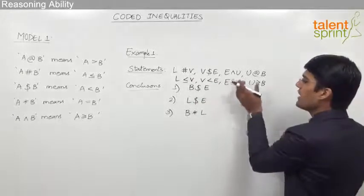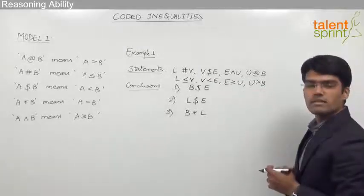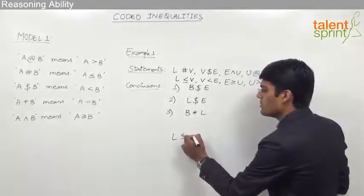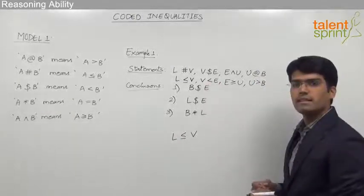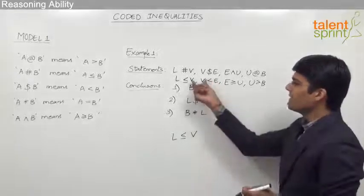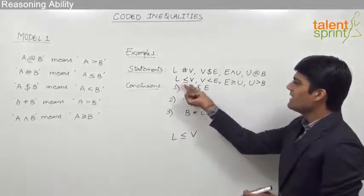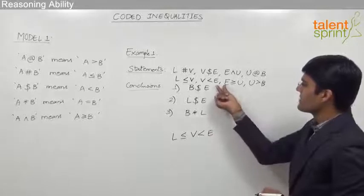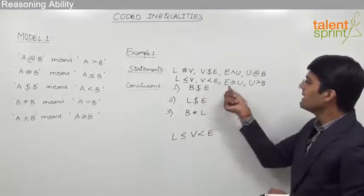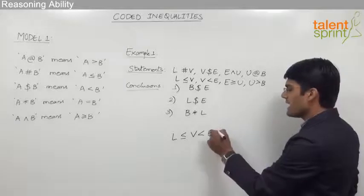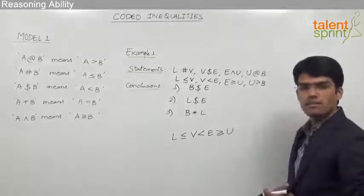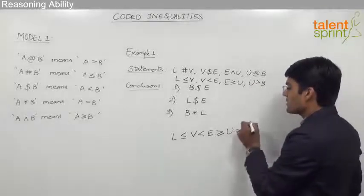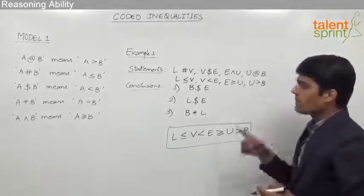Merging the statements: L ≤ V and V < E gives us L ≤ V < E. Then V < E and E ≥ U gives E ≥ U, and finally U > B. So the consolidated statement is: L ≤ V < E ≥ U > B.